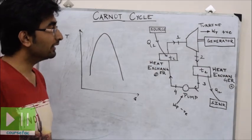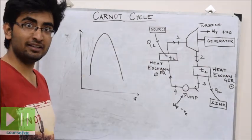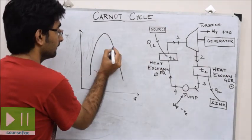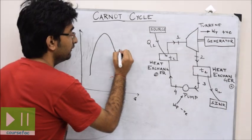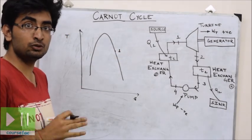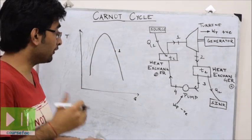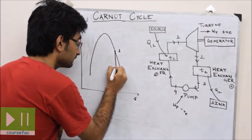From 1 to 2 is isentropic expansion. Let us assume this point as 1. There is no change in entropy, so this will be a vertical line on the TS diagram.